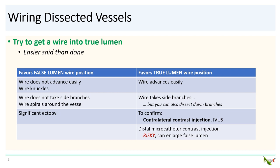Now, if your wire advances easily and takes all of the side branches, then you are probably in the true lumen. However, remember you can also dissect down side branches. So just because you're going down side branches, it is not a slam dunk. The wire needs to go freely and easily down the side branches.